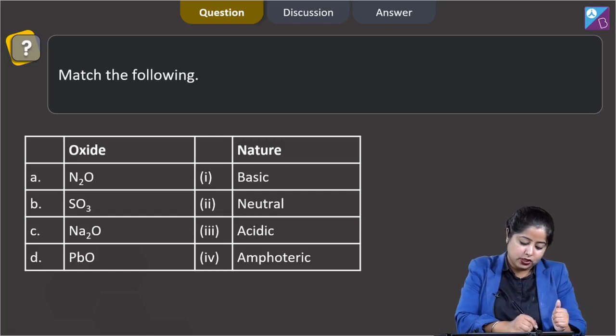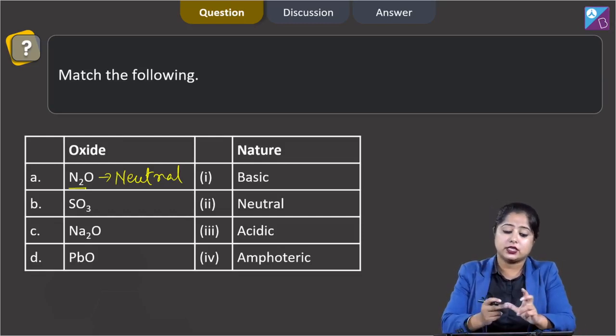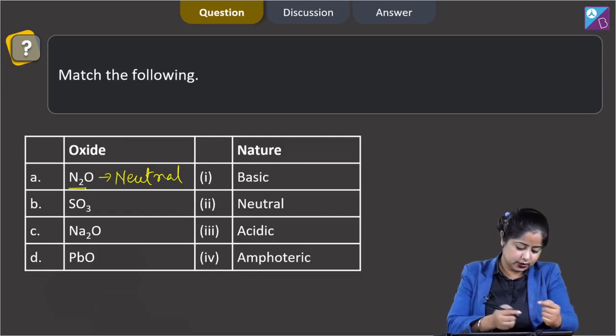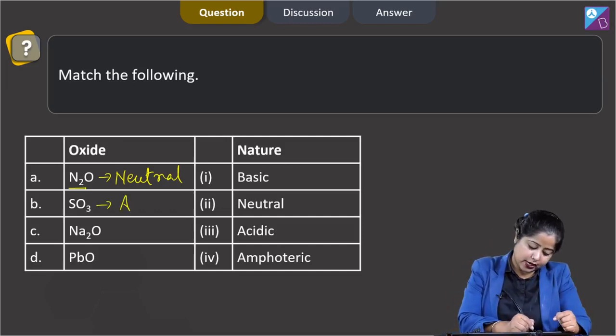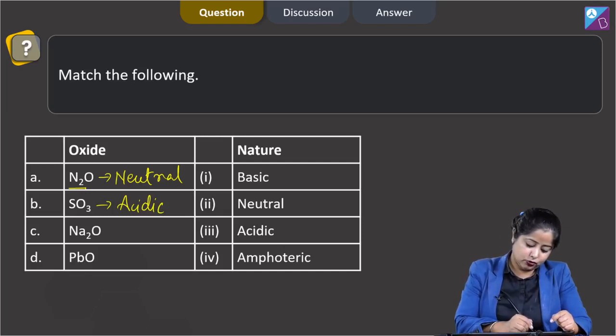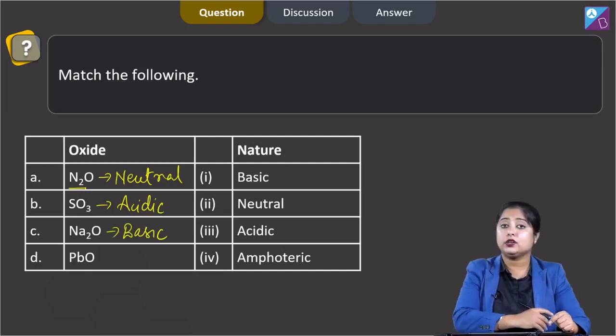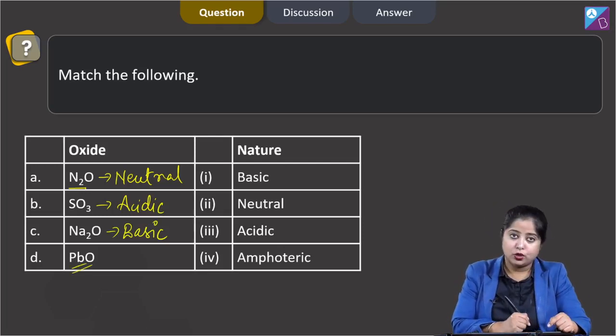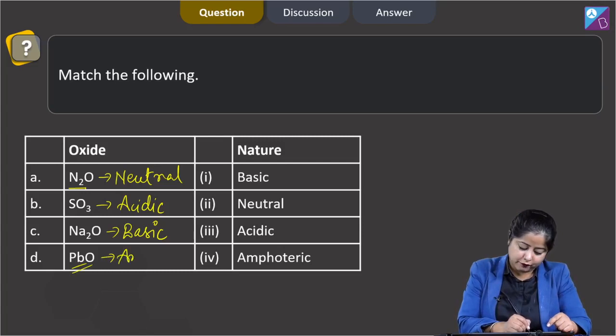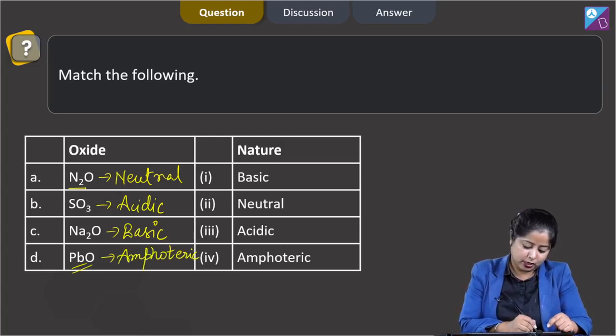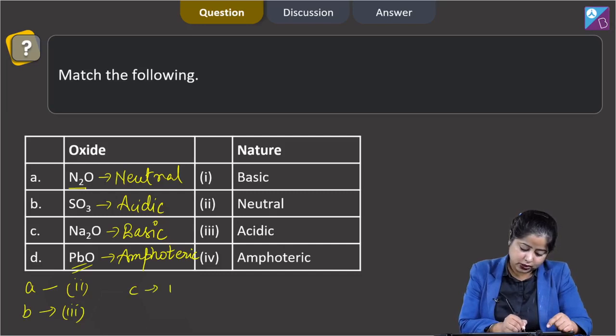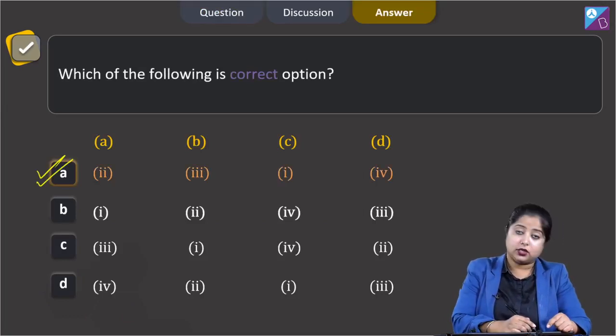Let us start with N2O. N2O is neutral in nature. We have generally three neutral oxides: N2O, NO, and CO. SO3 is acidic in nature. Na2O is basic in nature as metallic oxides are generally basic. PbO, lead oxide, is amphoteric in nature. That means the correct match of A is 2, B is 3, C is 1, and D is 4. The correct answer is option A.